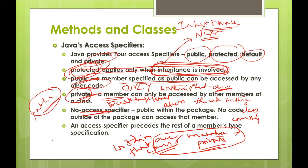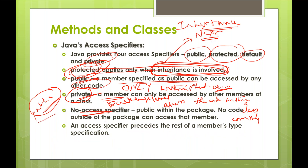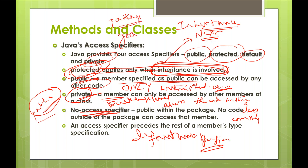No access specifier is our default. When we don't specify any access specifier — either public, protected, or private — that becomes the default access specifier, also called package level access. A package is nothing but a group of related classes.